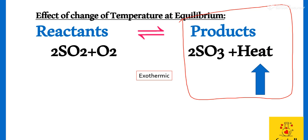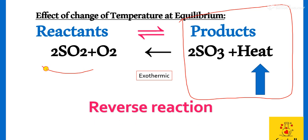The system will move in a direction to decrease the products. Toh wo reverse direction ho ghi. Products increase ho gai thi, or system will move in reverse side to decrease the products, or reactants increase ho jayenge.